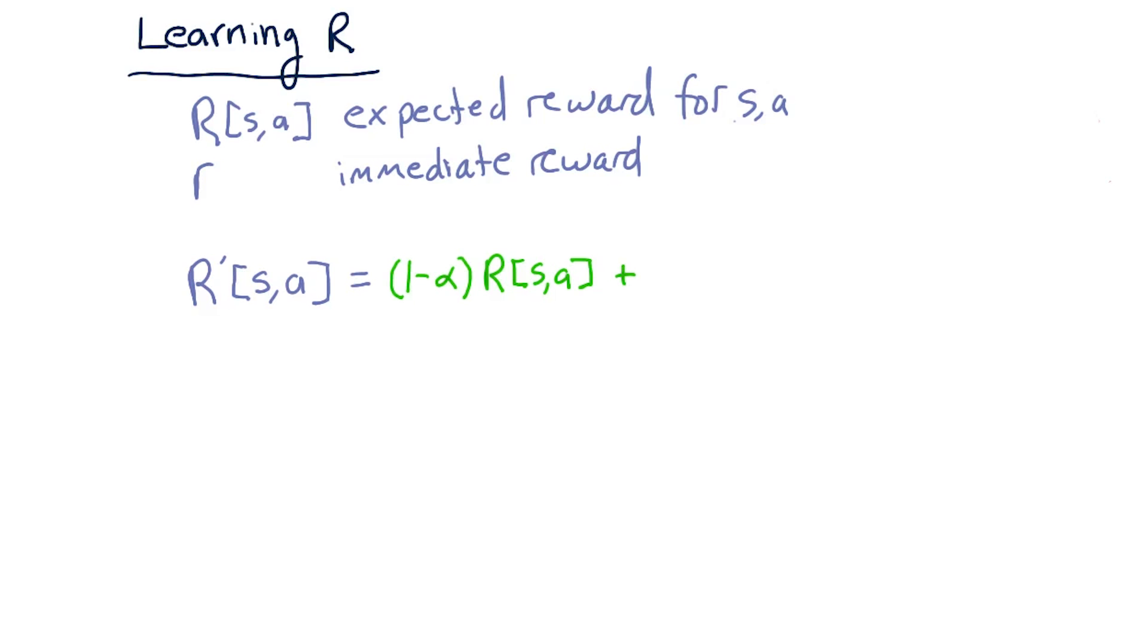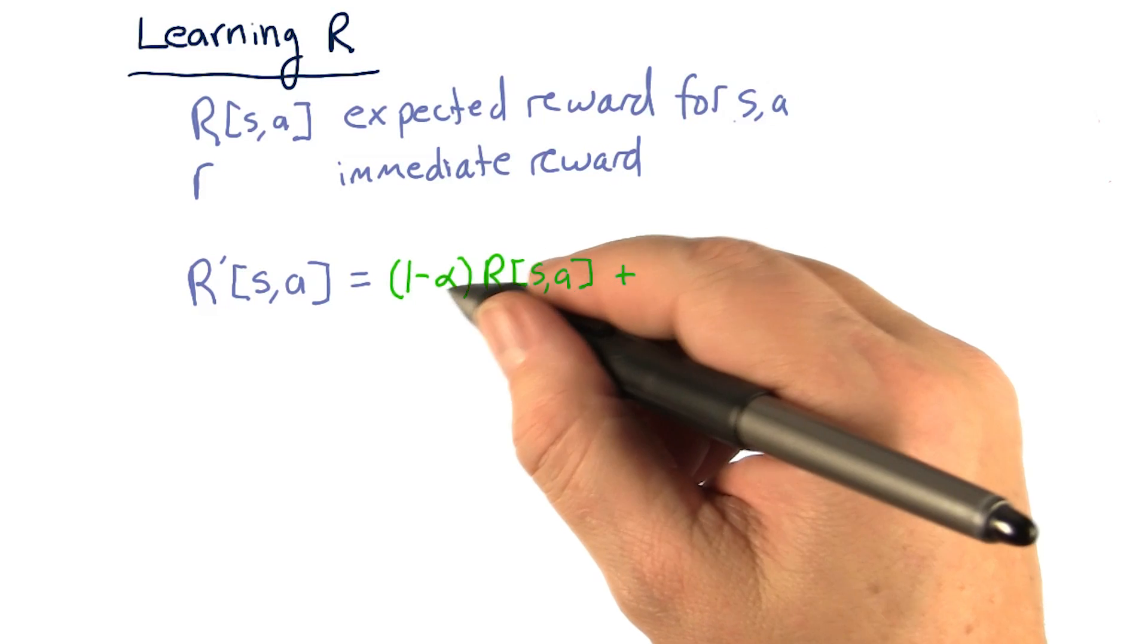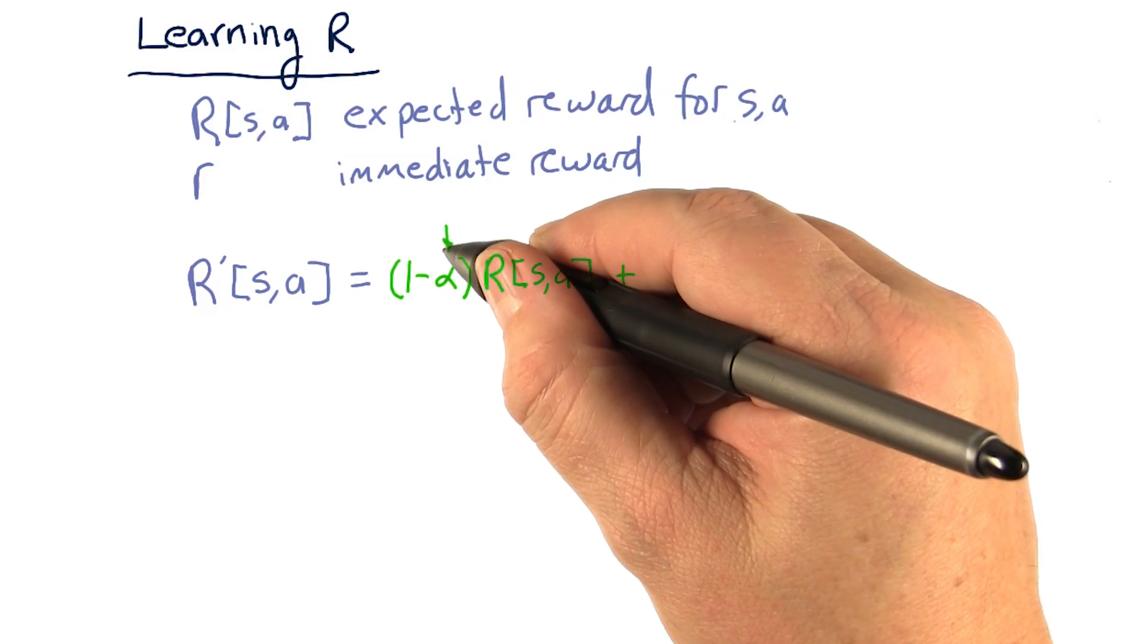And it's a simple equation, very much like the Q-table update equation. What we have is 1 minus alpha, where alpha is our learning rate.